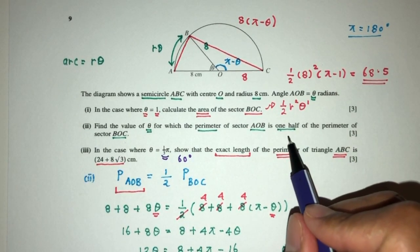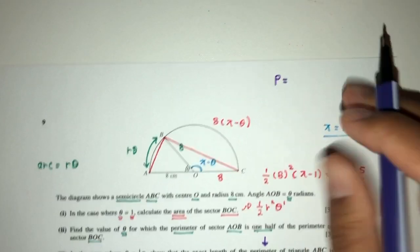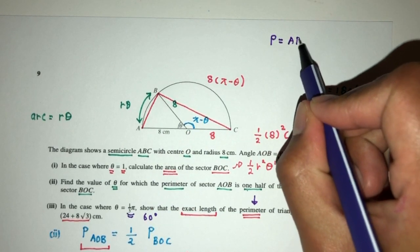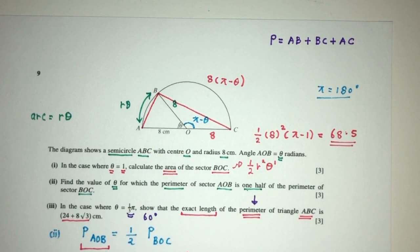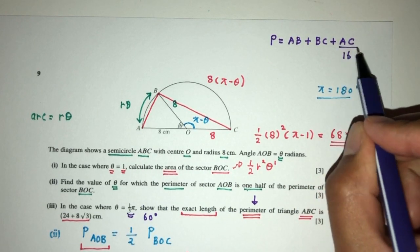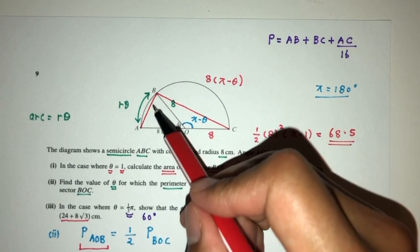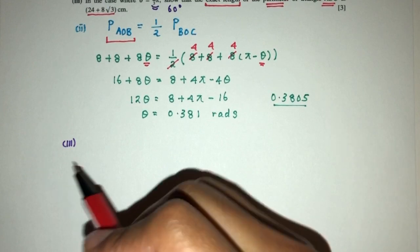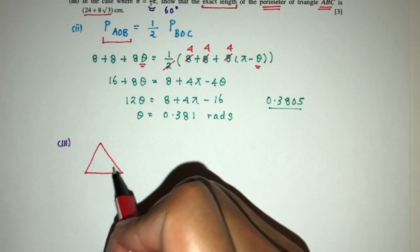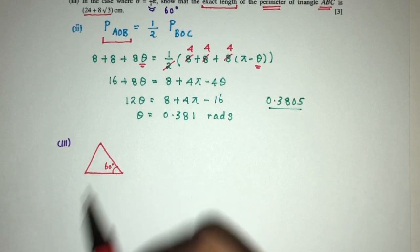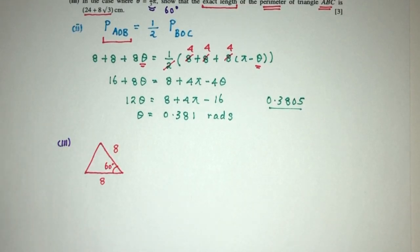How would you find the perimeter of triangle ABC? The perimeter has to be the length of AB plus BC plus AC. AC is the diameter, so AC equals 16. Now we have to find AB and BC. For AB, we observe triangle ABO: both OA and OB are radii of 8, and the angle AOB is 60 degrees. We can use the cosine rule.